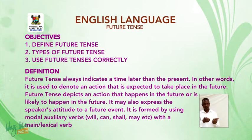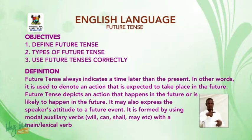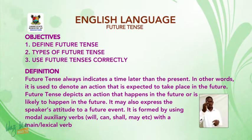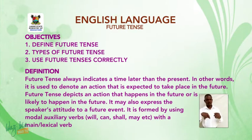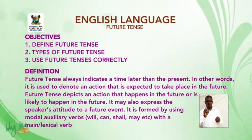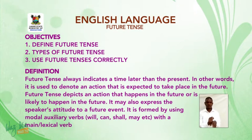A future tense always indicates a time later than the present. In other words, it is used to denote an action that is expected to take place in the future. When we talk about a future tense, it means the action has not taken place. The action is not on, but the action will occur in the nearest future. The action is yet to be embarked upon.